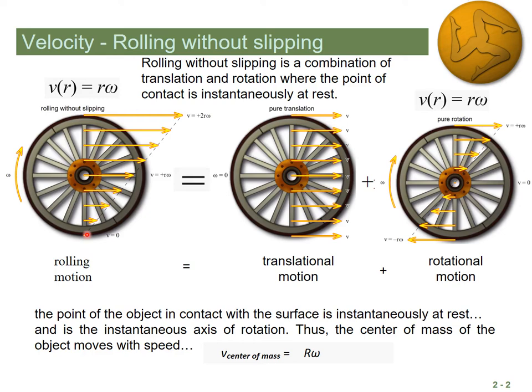Here's an example with a rolling tire that is not slipping on the ground — no skid marks. The velocity of the tire at the contact point with the ground is actually zero. The axle at the center moves at the same velocity as the car, and the top of the wheel moves faster. You get that by adding the translational motion of the wheel's center plus rotational motion. At the top, they add together for a large velocity; at the bottom, they cancel out to give zero.